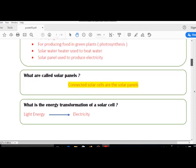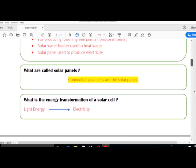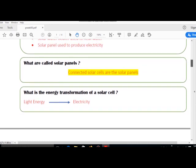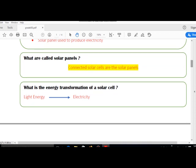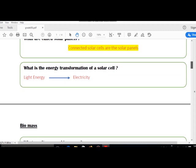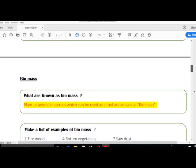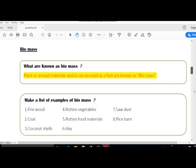What are called solar panels? Connected solar cells are the solar panel. What is the energy transformation of a solar cell? Light energy is converted to electricity. This is the energy transformation that takes place in a solar cell.